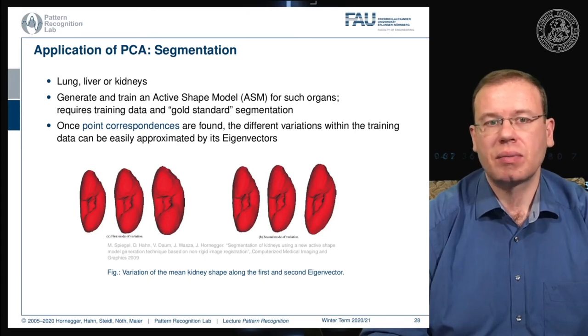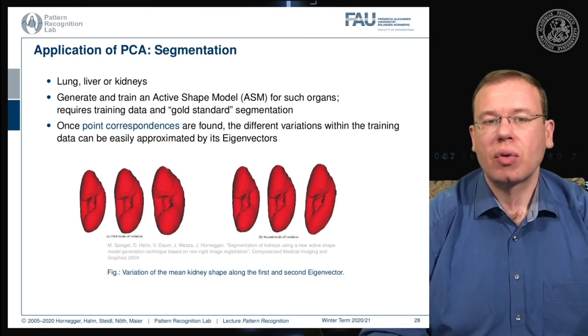Here you essentially see the shape variations over the first two eigenvectors. On the left hand side you see the shape variations over the first eigenvector dimension. On the right hand side, the variation over the second eigenvector. We can now use that and estimate rotation, translation, and those shape parameters.